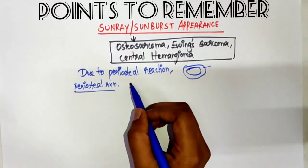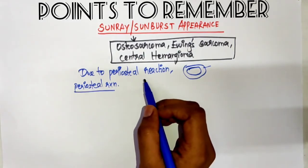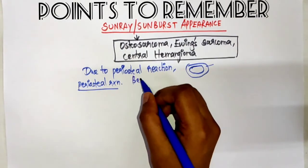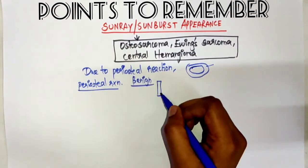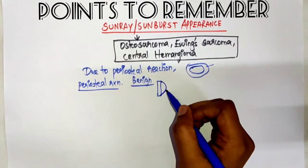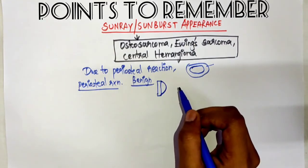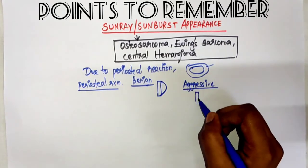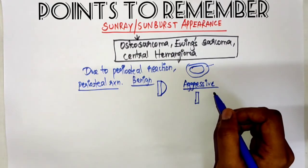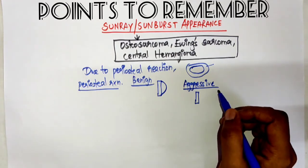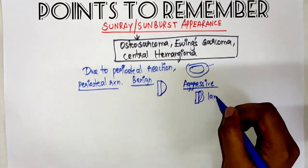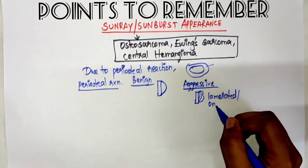In slow-growing lesions, such as benign lesions, the periosteum has time to produce new bone. But in rapid-growing aggressive lesions, it cannot produce the new bone fast enough, so there will be an interrupted pattern — that is the lamellated or onion-skin pattern.